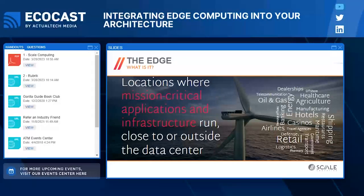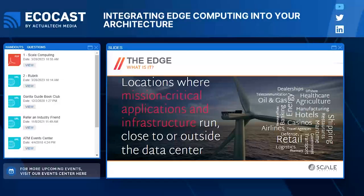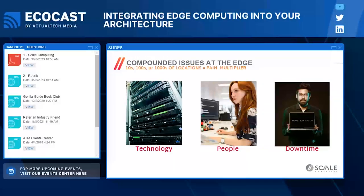Our definition of the edge: it's the location where mission-critical applications and infrastructure run close to or outside a central data center — including cloud. Whether it's one location or a thousand locations like retail stores, if you're running a mission-critical application close to where data is being generated or used, that's the edge. Edge deployments are often in places that do not have IT staff, and the issues really get compounded when you're managing tens, hundreds, or thousands of locations.